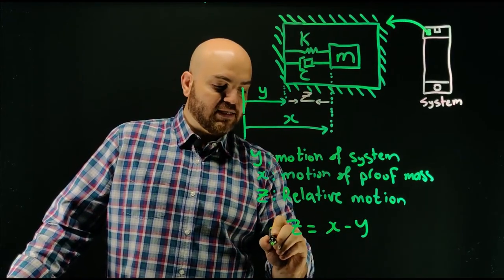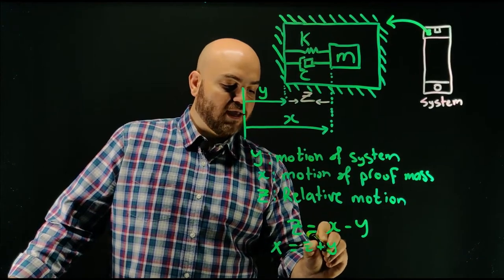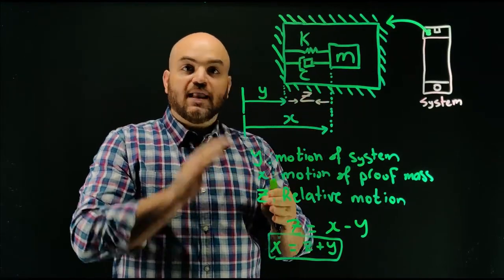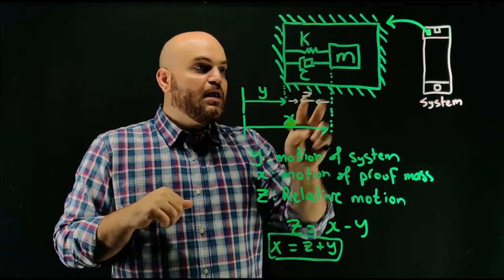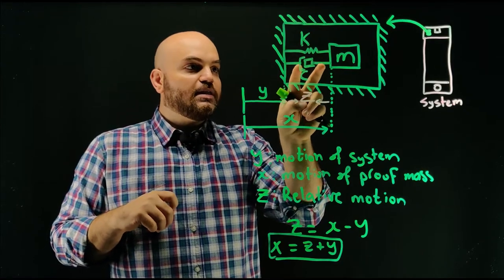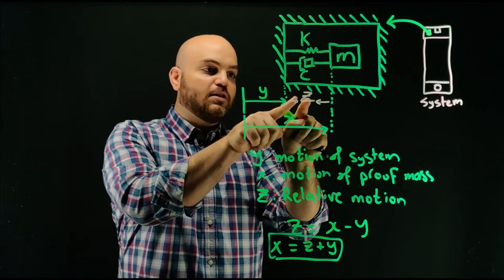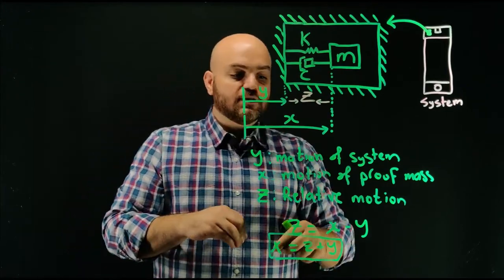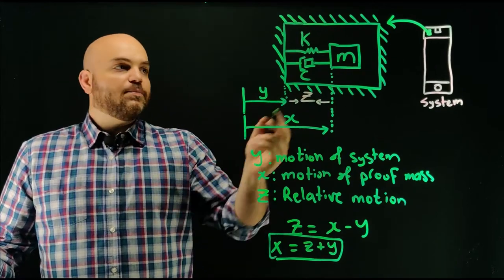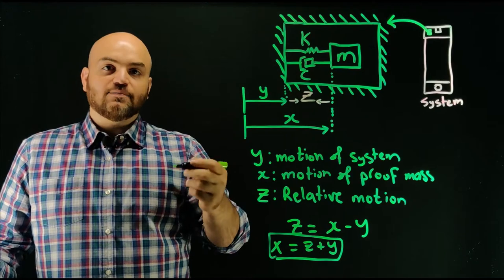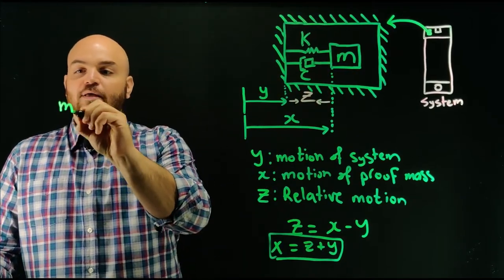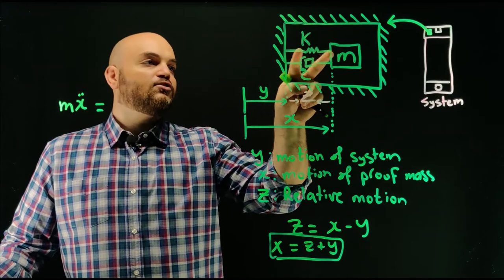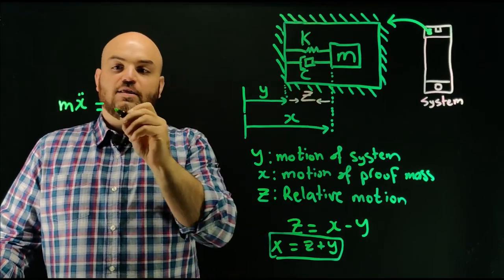Why is it important to know Z? For a spring-mass-damper system, the forces acting on the mass from the spring and the damper depend on how much they are displaced. You can see that they're going to be displaced by a distance Z and move at a velocity in that coordinate frame. This is very critical. From Newton's second law, the summation of forces on the mass gives M times X double-dot equal to the summation of forces. The forces acting are from stiffness and damping — both impeding its motion, trying to pull it back.